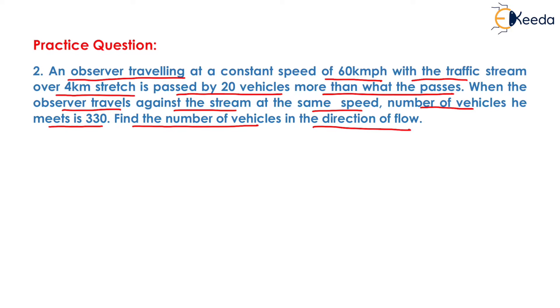It means that we have to determine the value of Q. Now, for solving this question, first of all we need to write the given values which will be: length equals to 4 km, speed equals to 60 km per hour, overtaking equals to 20.